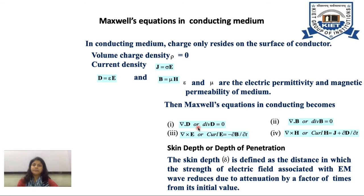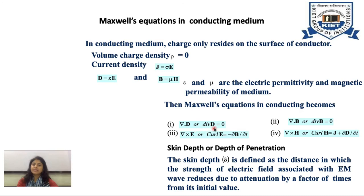Maxwell equations in conducting medium. In a conducting medium, charges reside only on the surface of the conductor, so volume charge density rho equals 0 and current density J is not zero. D equals epsilon E and B equals mu H. The Maxwell equations become: divergence D equals 0, divergence B equals 0, curl E equals minus del B over del t, and curl H equals J plus del D over del t.